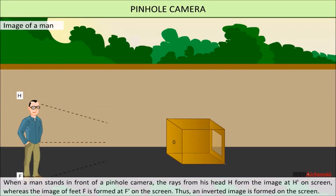When a man stands in front of a pinhole camera, the rays from his head, H, form the image at H' on the screen, whereas the image of his feet, F, is formed at F' on the screen. Thus, an inverted image is formed on the screen.